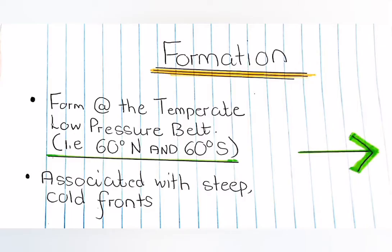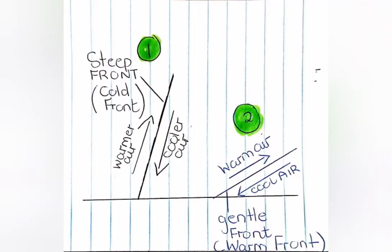Moving on to how tornadoes are actually formed. Tornadoes aren't common throughout the entire globe, meaning there are areas that are more prone or more exposed to tornadoes than others. Most tornadoes take place at the temperate low pressure belts and are usually linked to steep cold fronts where air rises more rapidly compared to warm gentle fronts. Therefore, there's a faster formation of the clouds that are associated with the formation of tornadoes.